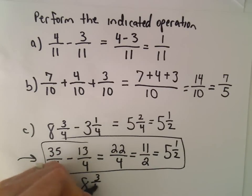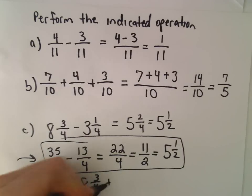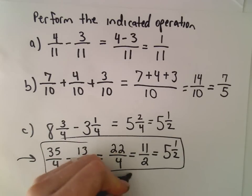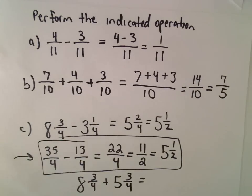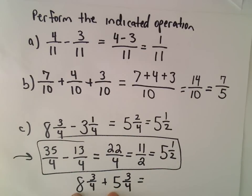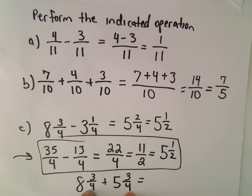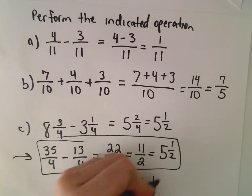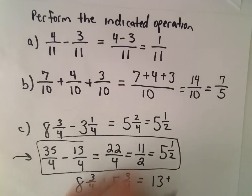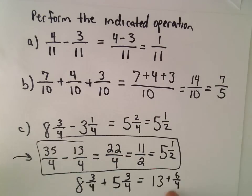Maybe if you had 8 3/4 + 5 3/4. In this case, if you add the whole numbers, 8 and 5 gives you 13. And then you would do 3/4 and 3/4, which would give you 6/4. So you would have 13, and another 6/4, which you would have to turn into 1 1/2, etc.